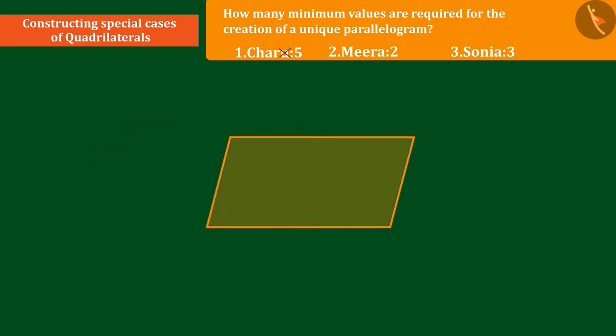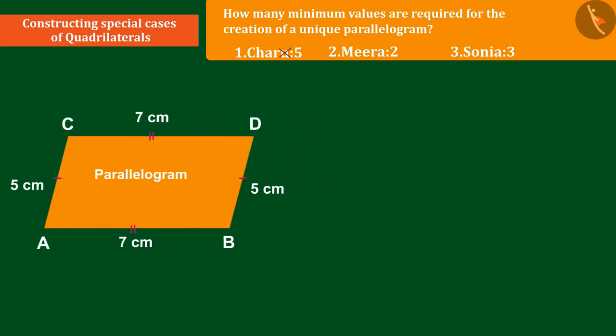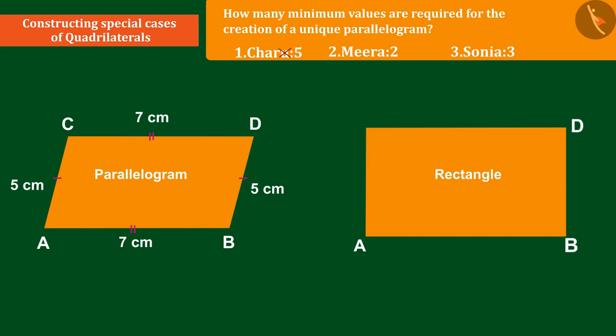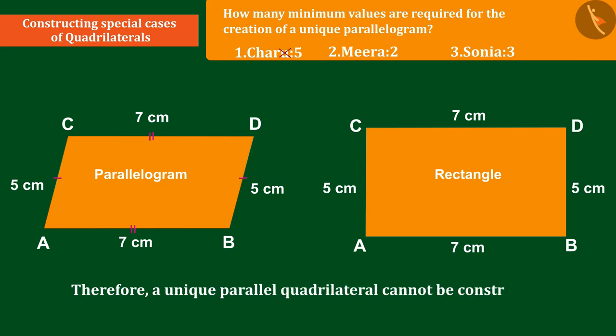Suppose we construct a parallelogram ABCD in this way. The measurement values of the adjacent sides of ABCD are 7 cm and 5 cm. From these measurements, we can also construct a rectangle. So we can say that by measuring the adjacent sides, a parallelogram will be formed, but it will not be unique because in this way a rectangle can also be created. Therefore, a unique parallel quadrilateral cannot be constructed by the value of adjacent sides only.